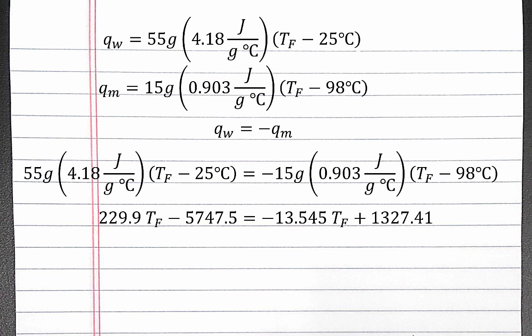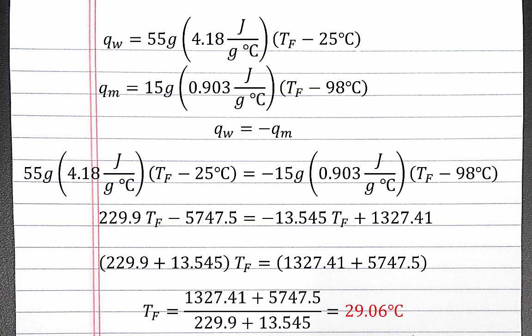And then we need to get all of our TFs on one side and our numbers on the other. So we'll add 13.545 TF to both sides and add 5747.5 to both sides. Then we can solve for TF by dividing both sides by 229.9 plus 13.545.